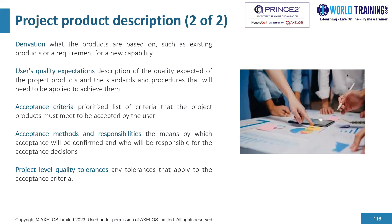The project product description also includes acceptance criteria — a prioritized list of criteria that the project products must meet to be accepted by the user. There is a section on acceptance methods and responsibilities, covering the means by which acceptance will be confirmed and who will be responsible for the acceptance decisions. Finally, there is a section on project-level quality tolerances, where any tolerances that apply to the acceptance criteria are documented.